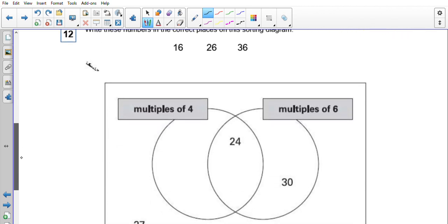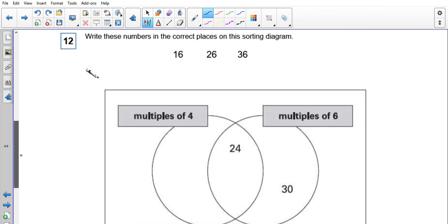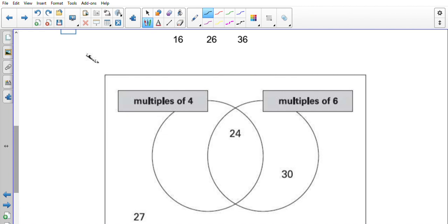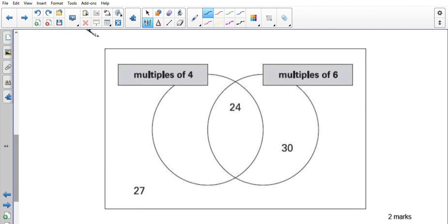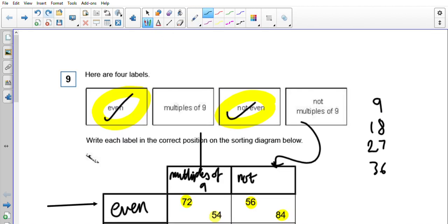Question number 12 says to write these numbers in the correct places on this sorting diagram. So I've got 16, 26, and 36. Interestingly, down here I've got multiples of 4, I've got multiples of 6. In the middle then, that means they must be both. And we can take our knowledge from the previous question.